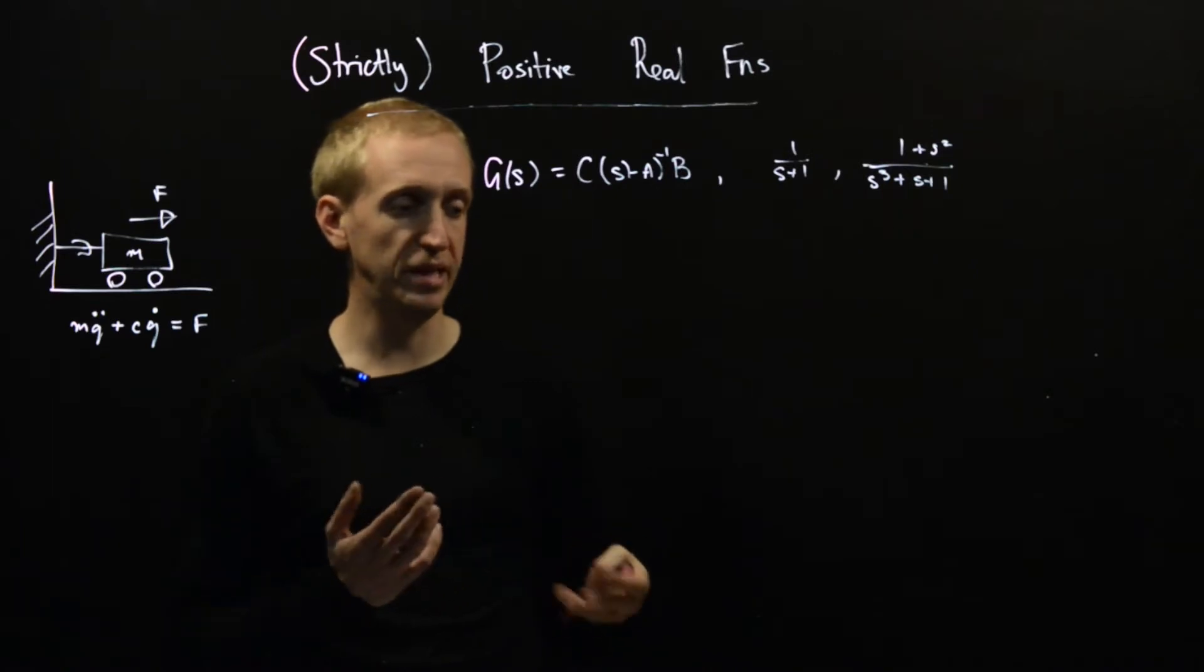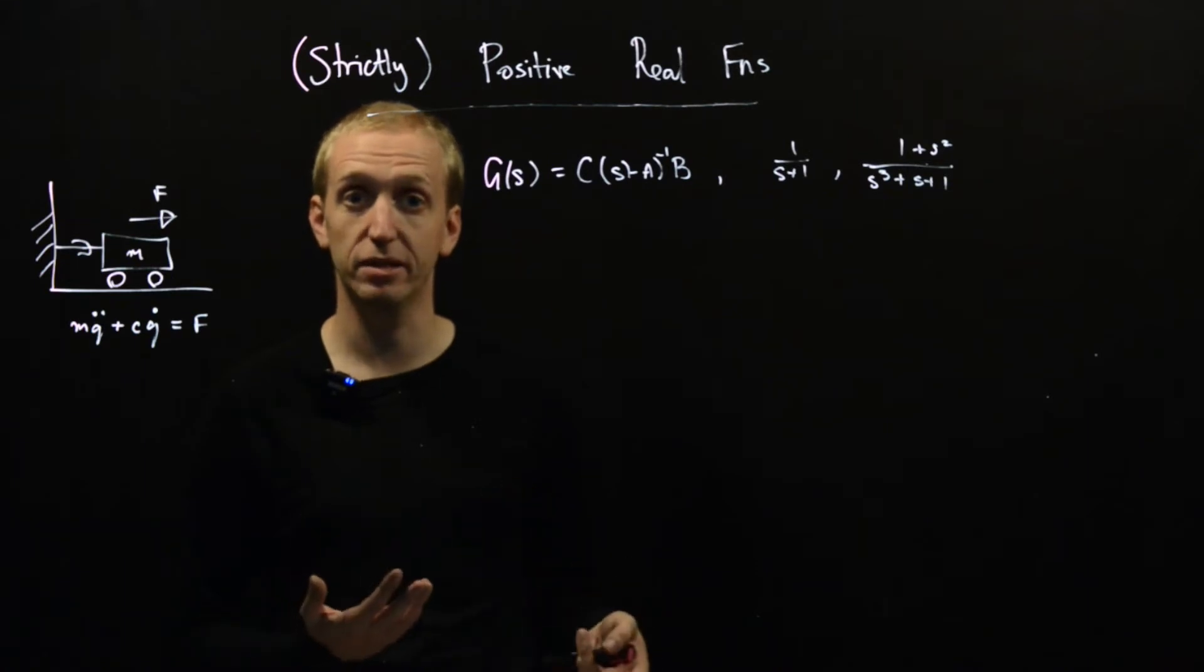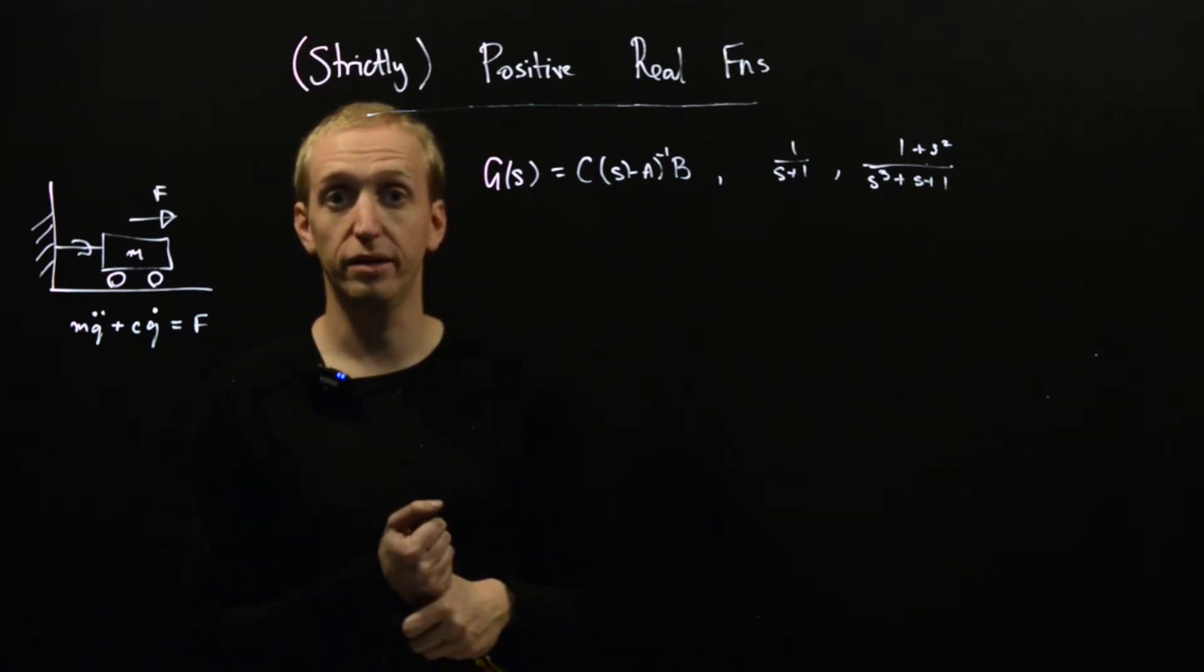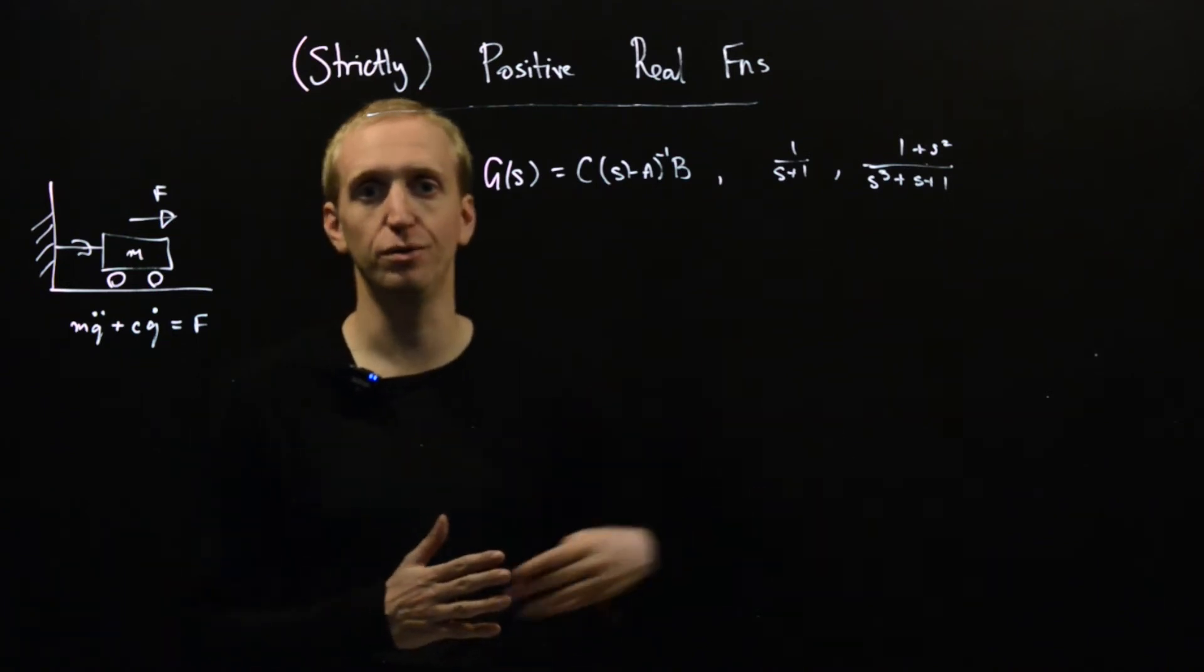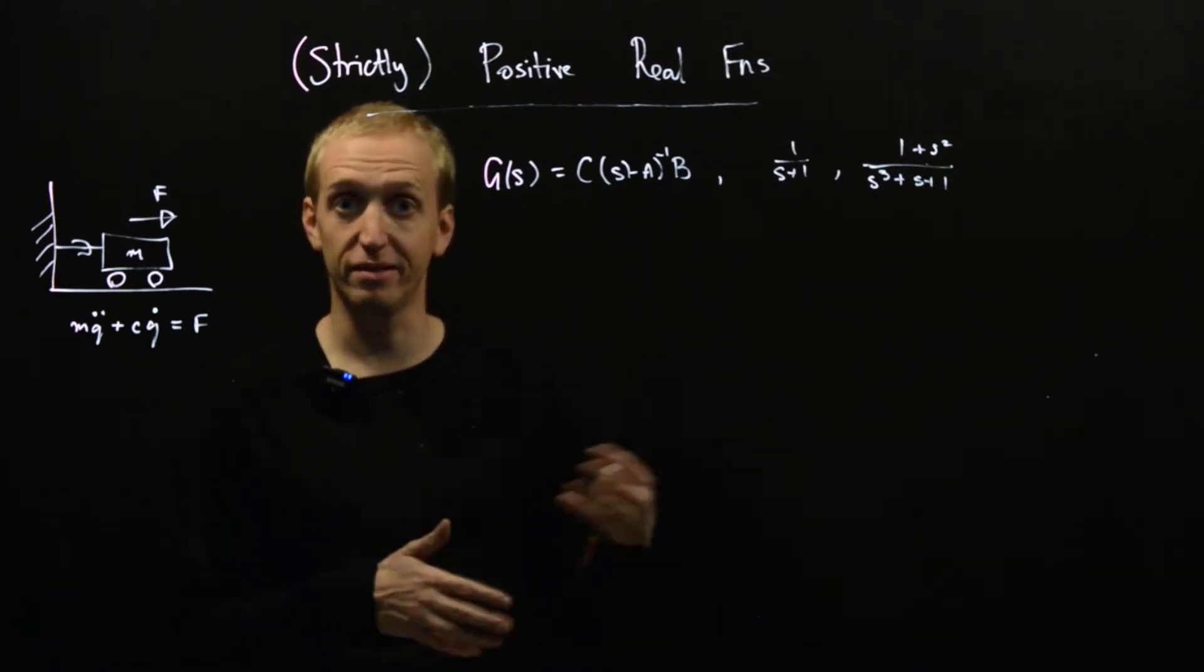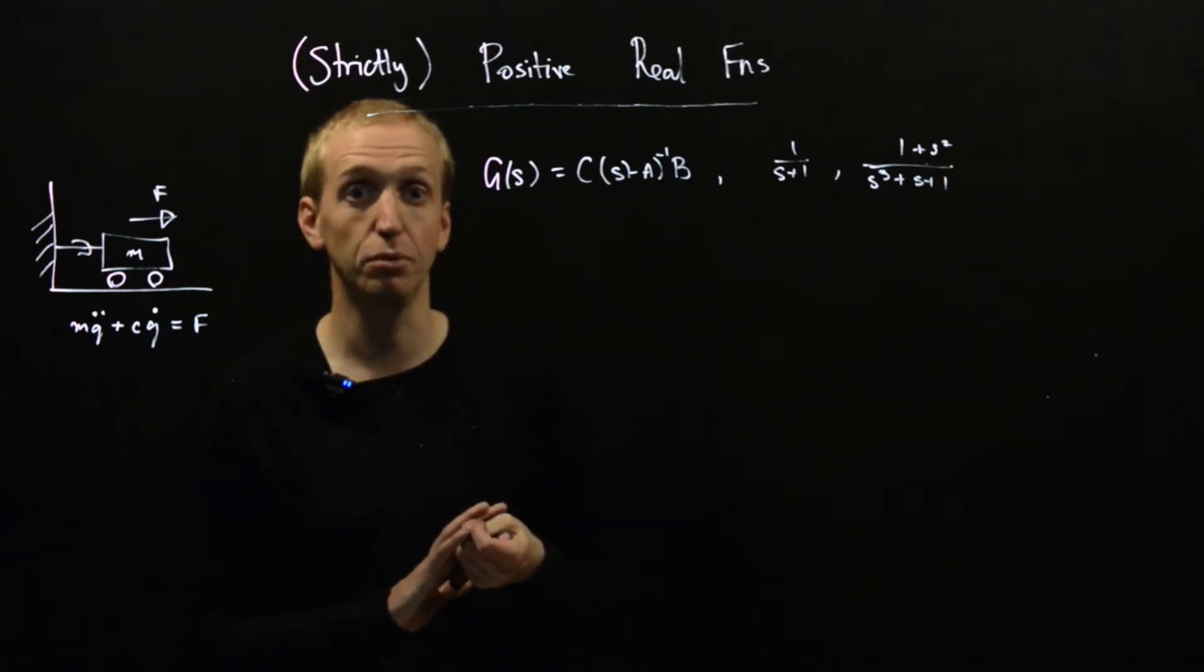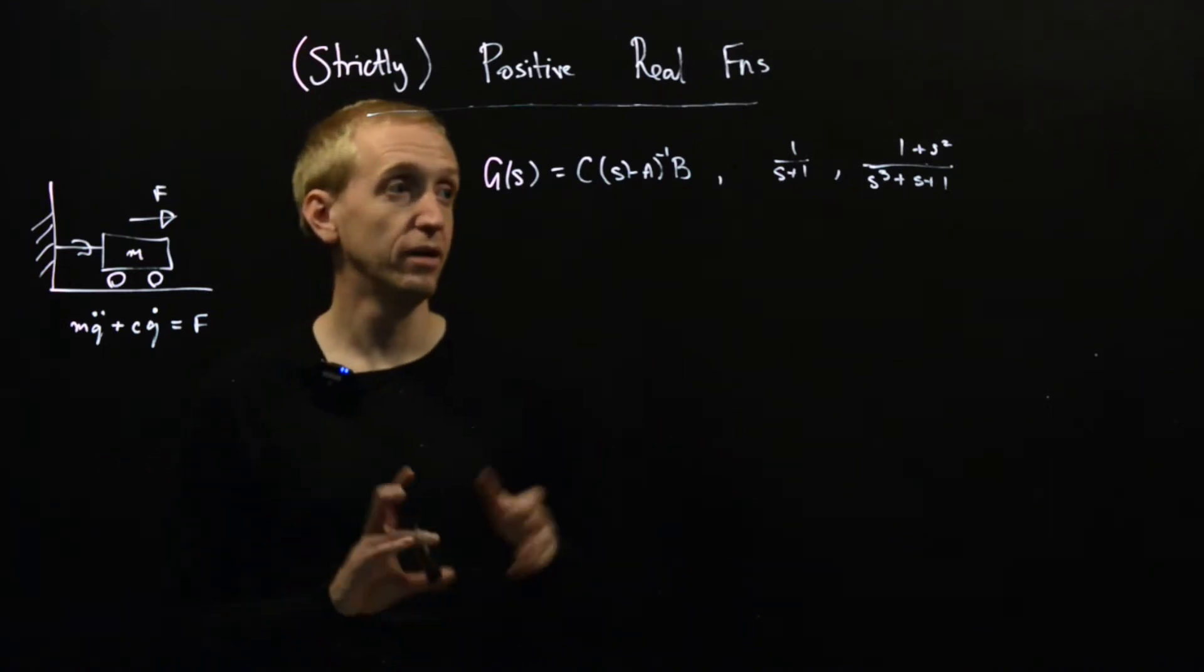And these two classes of transfer function have very close connections to the idea of passive systems. So these are systems that have no internal energy sources, but can only either conserve or dissipate energy. And these types of transfer functions are going to build a bridge to the energy functions or Lyapunov functions that we were investigating before. And it's through this class that we're going to be able to prove something that's called the passivity theorem, which we'll then be able to extend to prove the circle criterion. But today we're just going to talk about passive systems.